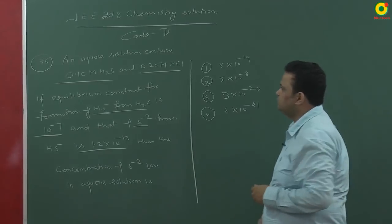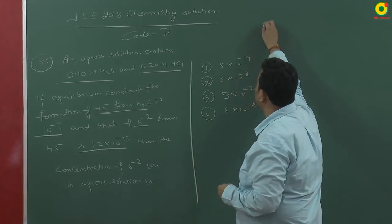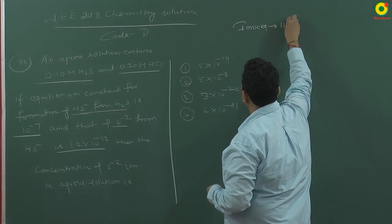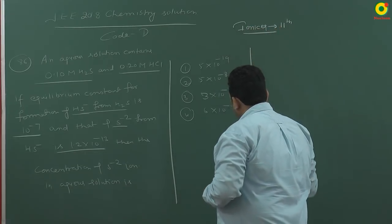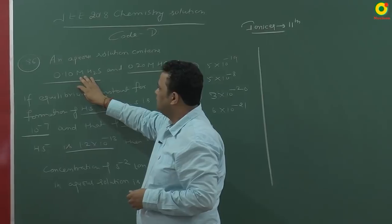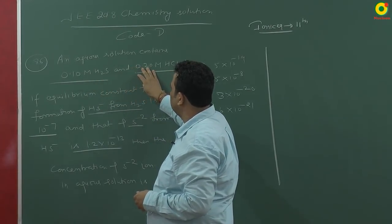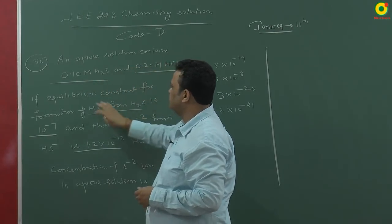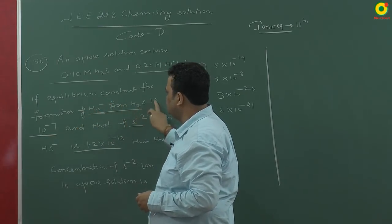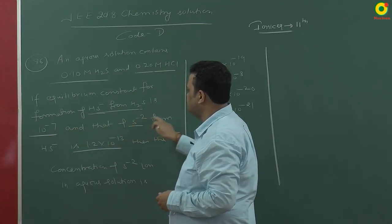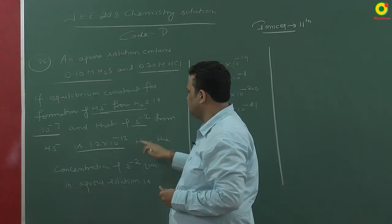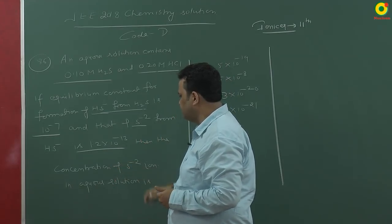This is question 86, from ionic equilibrium which is in 11th class level. An aqueous solution contains H2S 0.10 molar and 0.20 molar HCl. If equilibrium constant for formation of HS minus from H2S is 10 to the power minus 7 and that of S minus 2 from HS minus is 1.2 into 10 to the power minus 13, then the concentration of S minus 2 ion will.